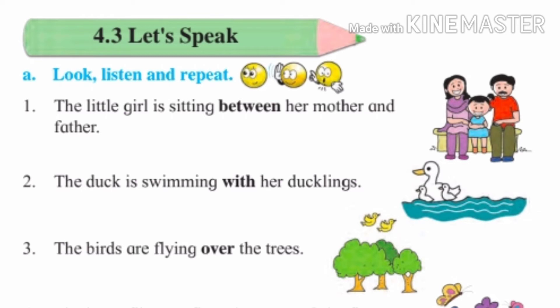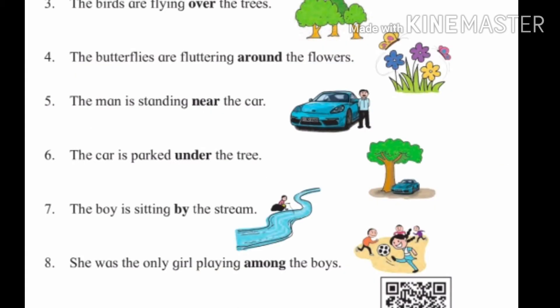You can see in the picture how the birds are flying over the trees, and they are over the trees — that is when we use the word 'war.' That's why we use 'over' here. The birds are flying over the trees.